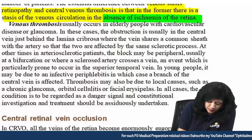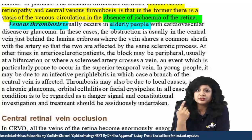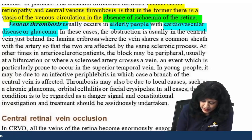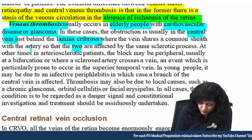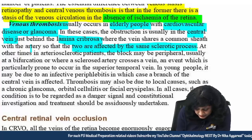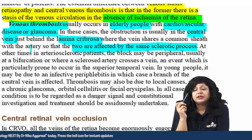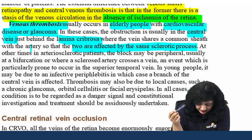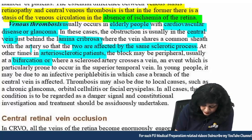Venous thrombosis per se occurs in elderly people — contrast this with venous stasis retinopathy which occurs in young adults. These elderly patients often have cardiovascular disease or glaucoma. Obstruction is usually in the central vein behind the lamina cribrosa, because the vein shares a common sheath with the artery and both are affected by the same sclerotic process.